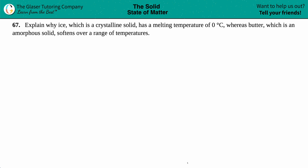Number 67: explain why ice, which is a crystalline solid, has a melting temperature of zero degrees Celsius, whereas butter, which is an amorphous solid, softens over a range of temperatures. So we have two comparable substances here.